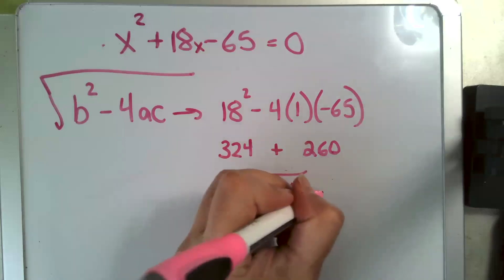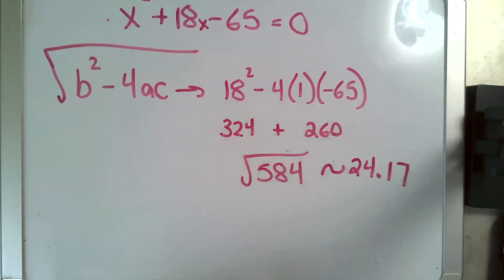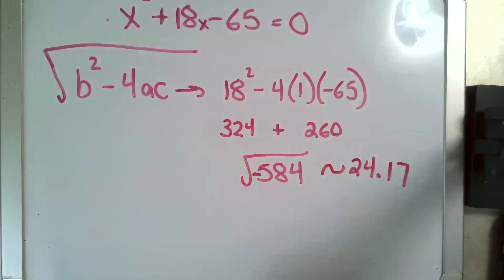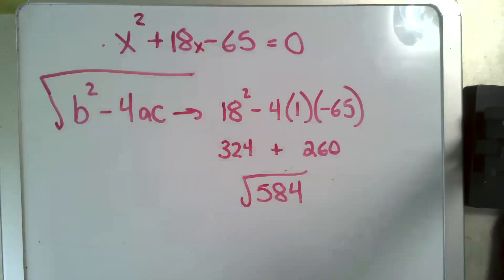If your discriminant is a positive number but is not a perfect square, that's the case here. The square root of 584 is approximately 24.17. Your answers are real, but they are not rational. If your discriminant were negative, let's say this had been negative 584, your answers are not real. You cannot have the square root of a negative number. And finally, if the discriminant is a perfect square, then your quadratic equation has real rational answers.